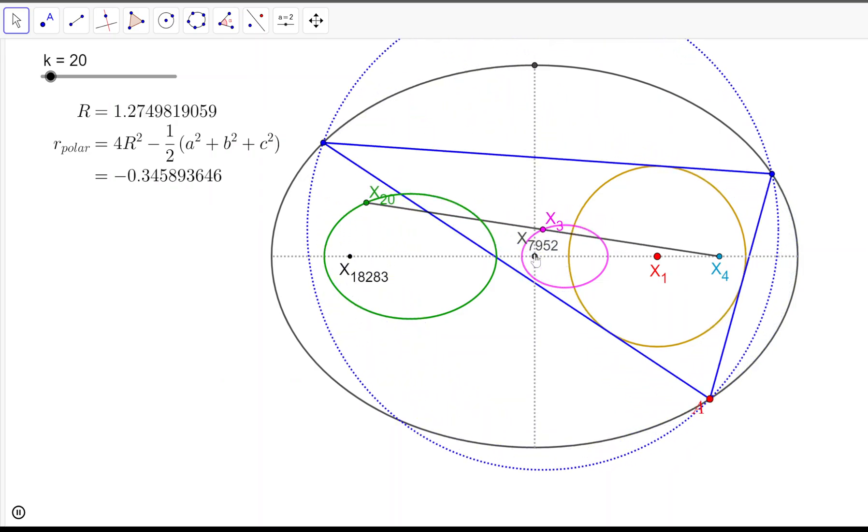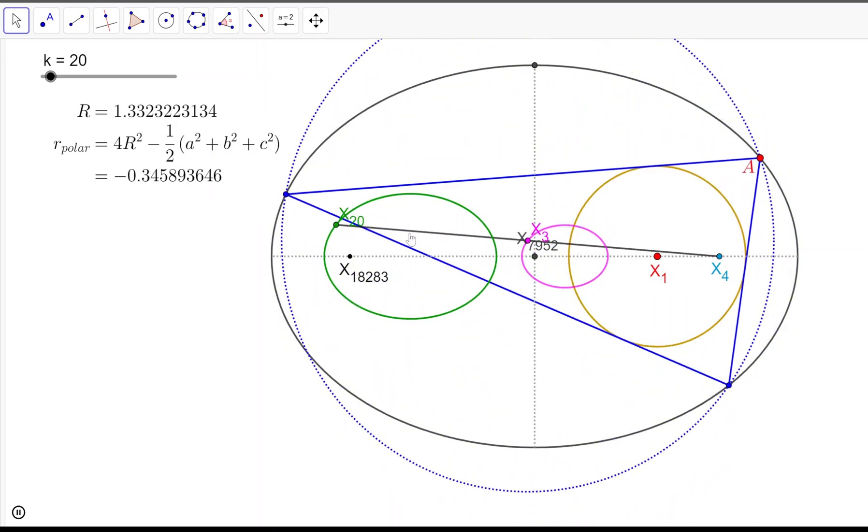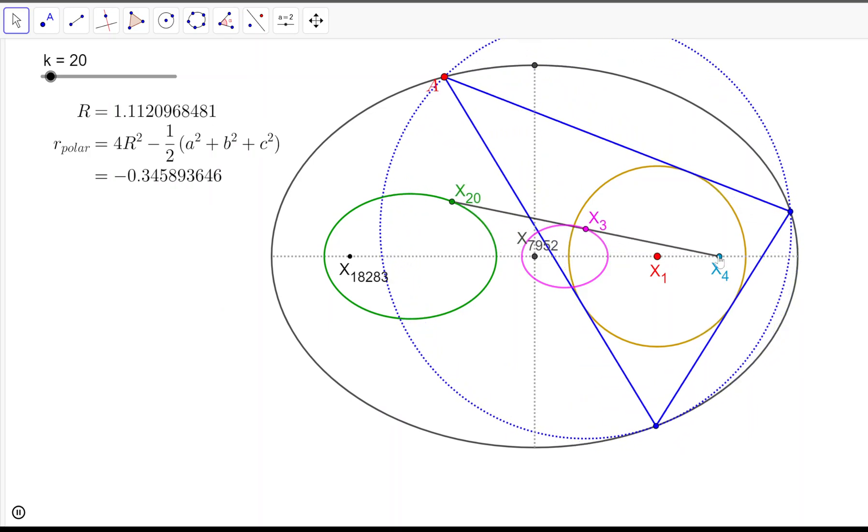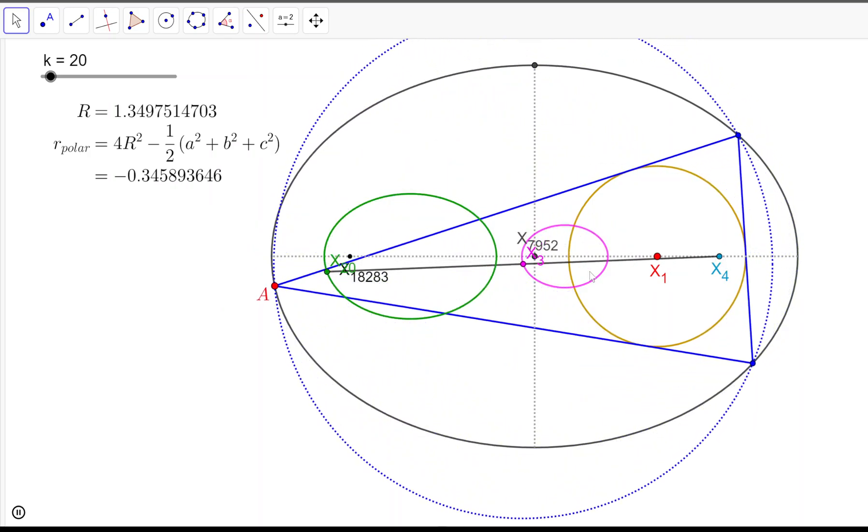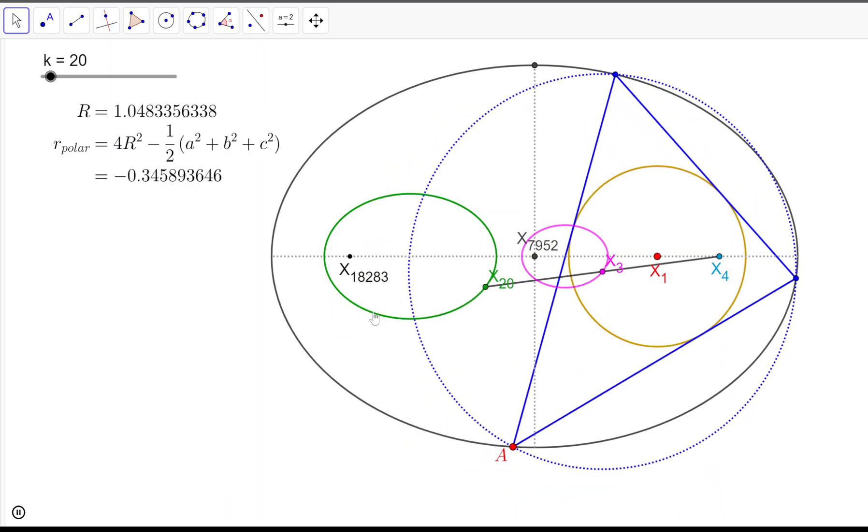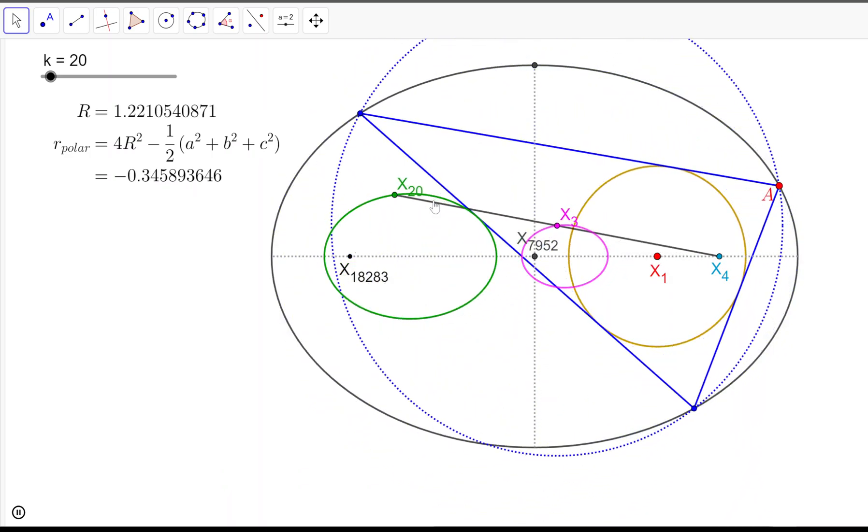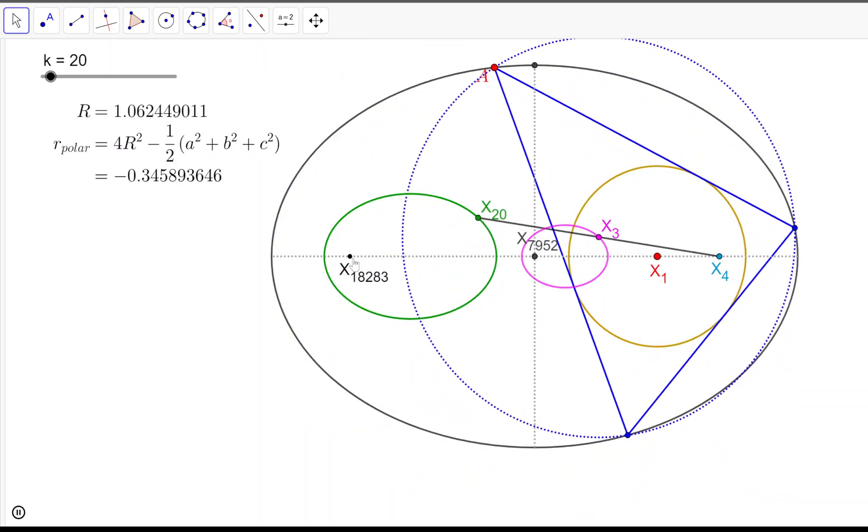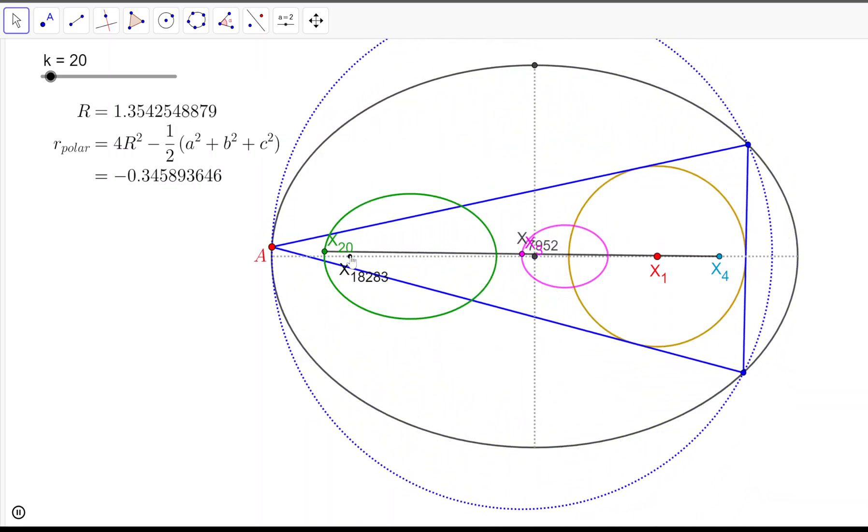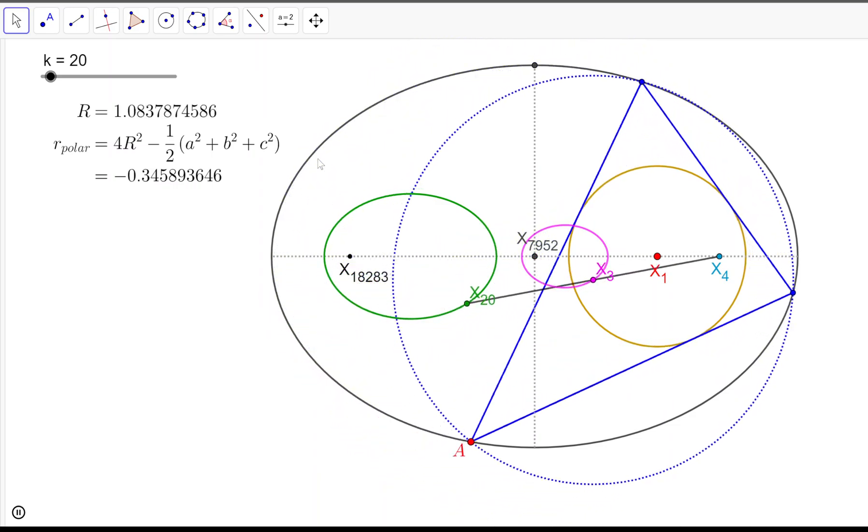Whereas the Delonchon point, which is a reflection of X4 on X3, and that's why I have this line here, will sweep a larger homothetic ellipse with one focus on the other focus of the orthofocal ellipse.